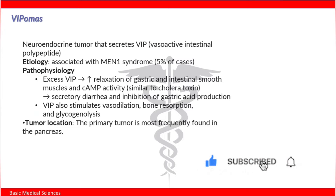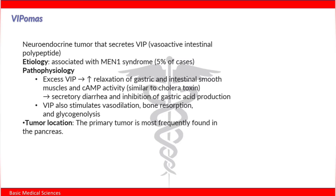Pathophysiology: excess VIP will lead to increased relaxation of gastric and intestinal smooth muscles, and it will also lead to increased cyclic AMP activity. This pathway is similar to cholera toxin. Together, this will lead to secretory diarrhea and inhibition of gastric acid production.